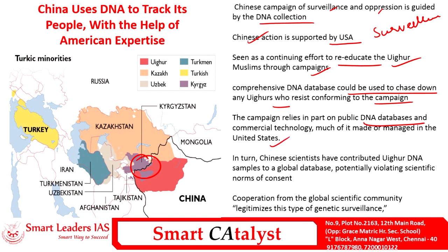The sad part is that this Chinese government initiative has received cooperation from the global scientific community, thereby legitimizing this type of genetic surveillance. The personal autonomy of Uighur Muslims is being violated, and this violation of personal autonomy is also violating their liberty as a group of individuals and acts as a tool to violate their democratic rights.